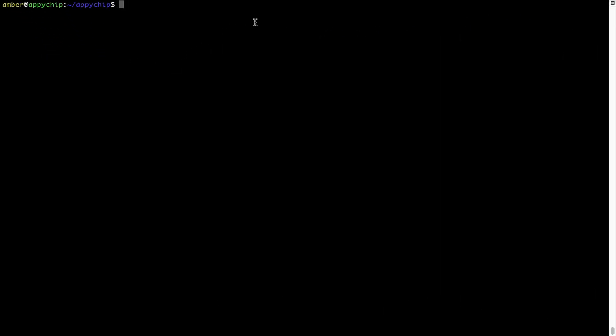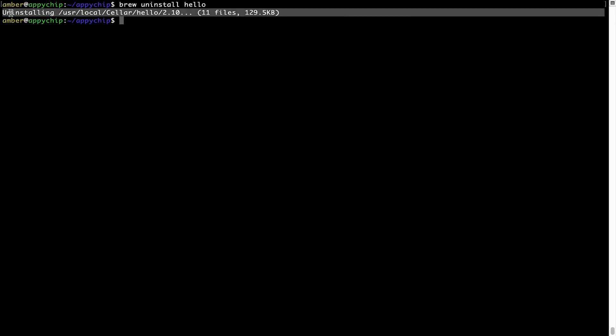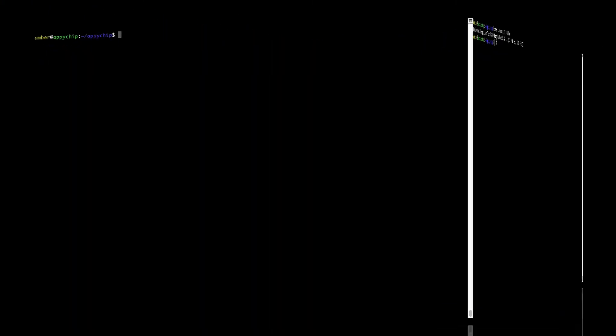And if you want to uninstall any app installed using brew, simply run brew space uninstall space the name of the program. In this case, I will try to uninstall the program hello, which is already installed on my system. As you can see within a few seconds, it says the program is successfully uninstalled.